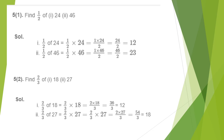Now Question 5, second part: find 2/3 of 18. This can be written as 2/3 × 18. Applying the rule of multiplication of a fraction by a whole number, we get 2 × 18 ÷ 3 = 36/3. Since 3 is common in numerator and denominator, cancelling gives the answer as 12.